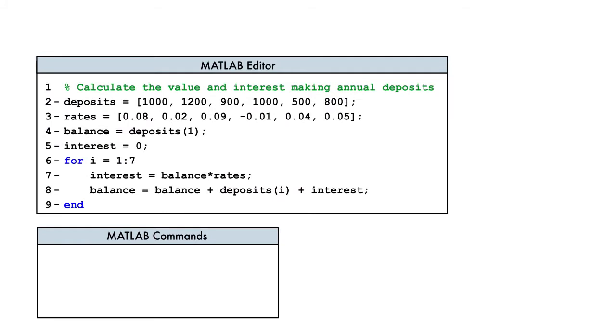Let's see how using this example. This code is meant to calculate the total account balance and interest earned on a vector of deposits and interest rates for each year. However, when we run the code, we receive an error message.